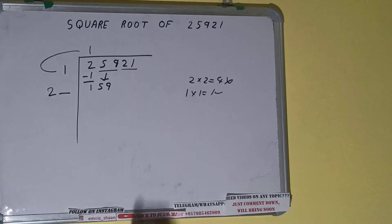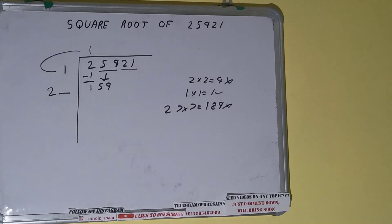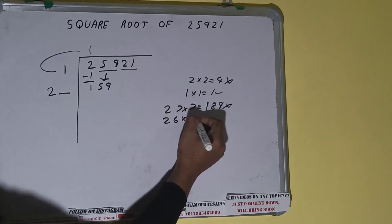So we can try seven times. 27 into 7 will be 189, which is bigger than the number, so we cannot use it. Let's try six times. So 26 into 6 will be 156, which is good to use.